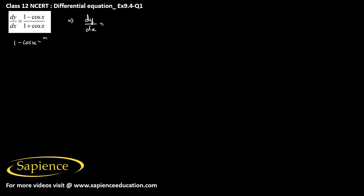1 minus cos x is 2 sin² x/2, and 1 plus cos x I can write it as 2 cos² x/2. So this is 2 sin² x/2 divided by 2 cos² x/2. Therefore I can write dy/dx equals 2 and 2 will cancel out. So this is sin by cos is tan, so it is tan² x/2.